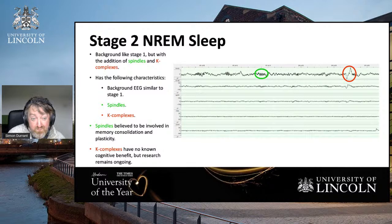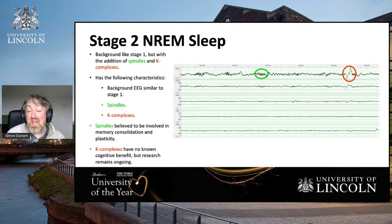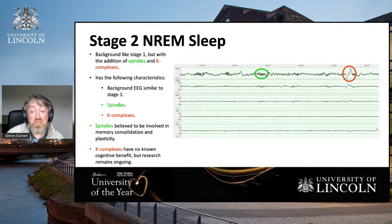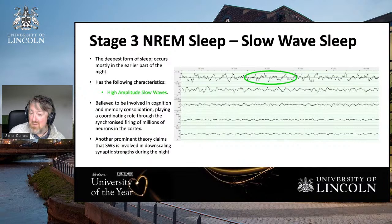K-complexes are believed to be slow waves. They occur during Stage 2 sleep. K-complexes in isolation have no known function — this is one area of active research; it's something we actually don't know what they do. But it is suspected that they are just slow waves — an isolated slow wave on its own — which brings us to Stage 3 non-REM sleep, which is slow wave sleep.